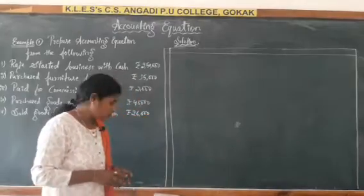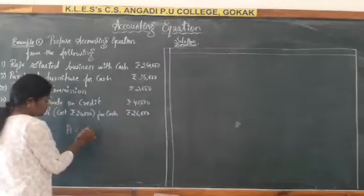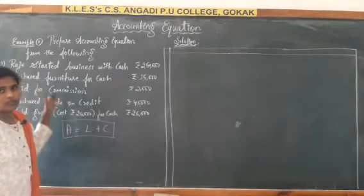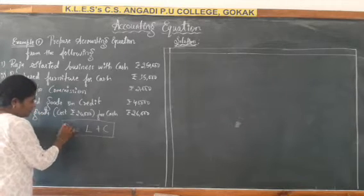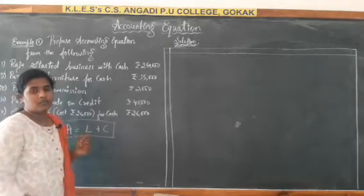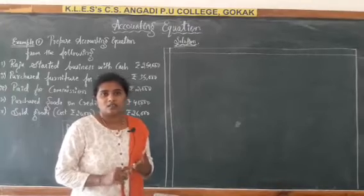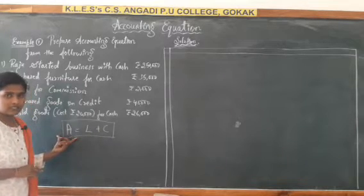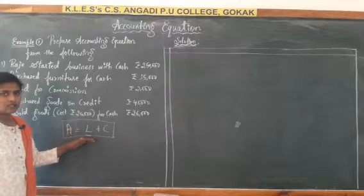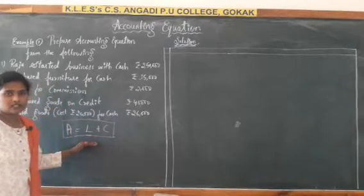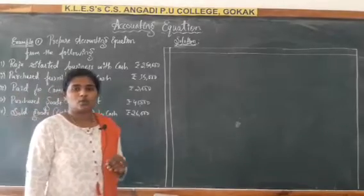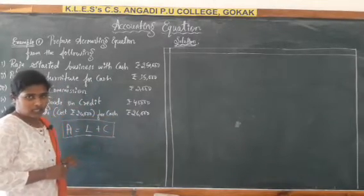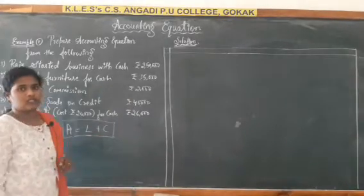Students, we already know the accounting equation formula: Assets = Liabilities + Capital. On this basis we are going to prepare the accounting equation. Assets include items like land, building, furniture, machinery, cash, bills receivable, and debtors. Liabilities include capital — already studied in the previous class — loans from institutions or banks, and bills payable. Capital is the amount invested in the business organization.